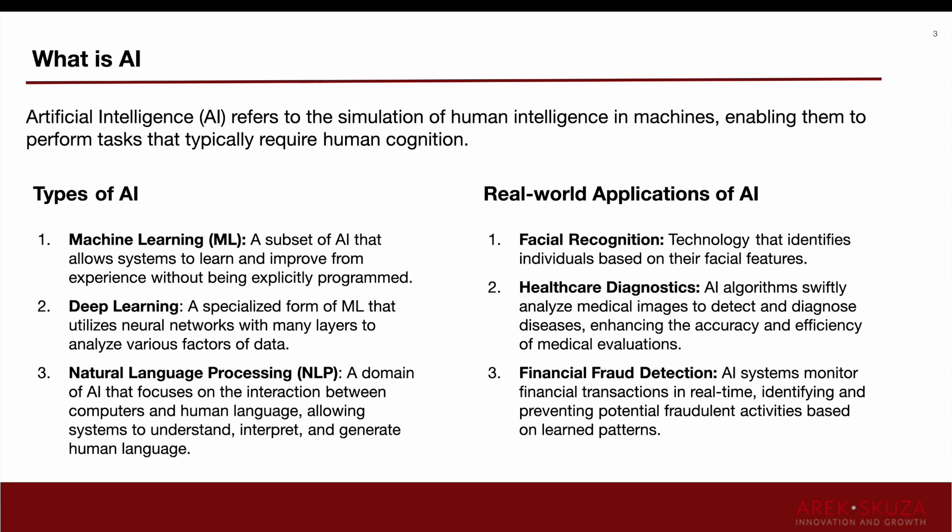These three elements of AI are things we can see in the world today. Let's look at some real examples. First, facial recognition, which recognizes faces, is a part of machine learning. Healthcare diagnosis, where AI algorithms swiftly analyze medical images to detect and diagnose diseases by looking for patterns — that's an example of deep learning. Financial fraud detection, where intelligent systems monitor financial transactions in real time, can be done by machine learning, deep learning, and NLP. AI is not always easy to define, but it consists of very specific elements.